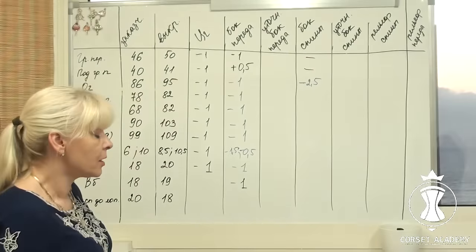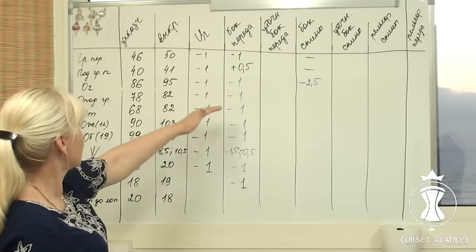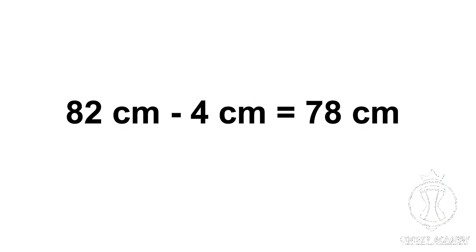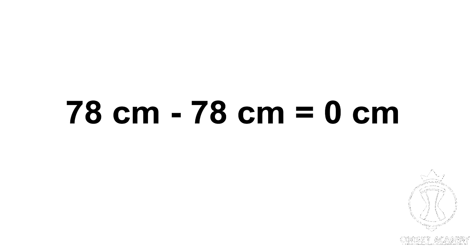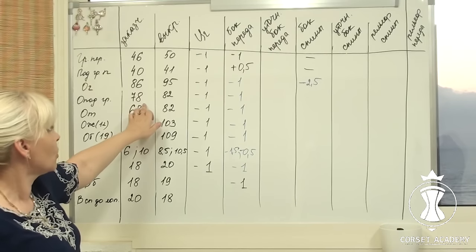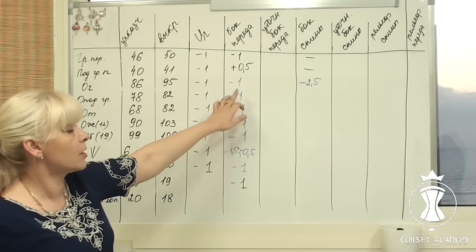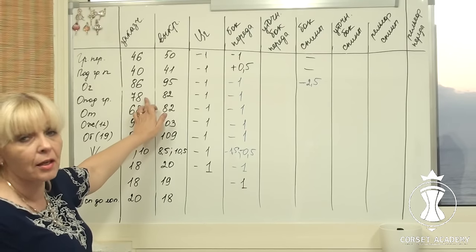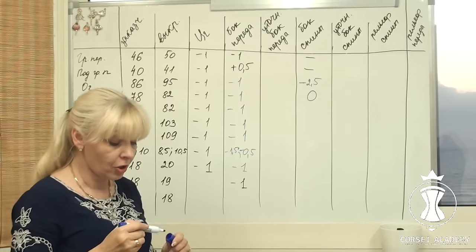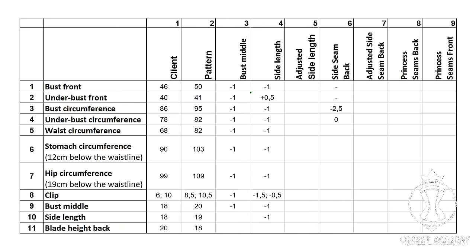The next measurement is the underbust circumference: 78 cm on the client and 82 cm on the pattern. 82 cm minus 4 cm equals 78 cm. 78 cm minus 78 cm equals 0 cm. I have arrived at my client's measurement. It means I shouldn't shift the side seam line of the back half of the dress at the underbust level, or else I won't meet my client's measurement. I write a zero in the table.